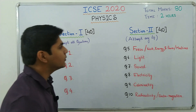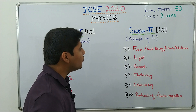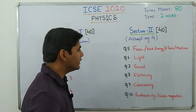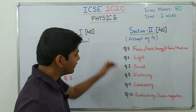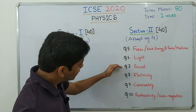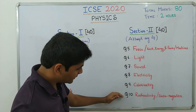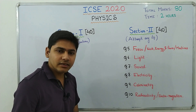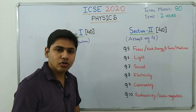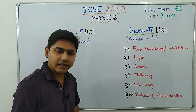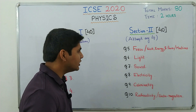Moving on to Section 2 — also 40 marks. You will have to attempt any four questions out of six questions given. Each question is of 10 marks, so 4 into 10 gives you 40 marks. There is a chapter combination in Section 2.